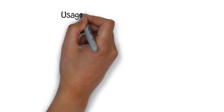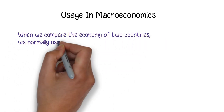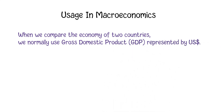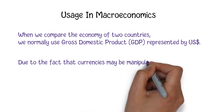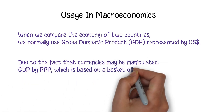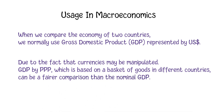The Big Mac Index is a specific example of purchasing power parity, which is used in macroeconomic analysis to compare the exchange rate of different countries' currencies through a basket of goods approach. When we compare the economy of two countries, the normal way is to use the nominal gross domestic product represented by US dollars, due to the fact that currencies may be manipulated. GDP by PPP, which is based on a basket of goods in different countries, can be a fairer comparison than the nominal GDP.